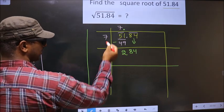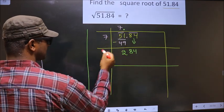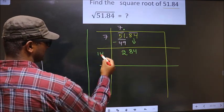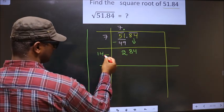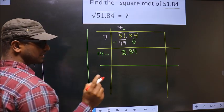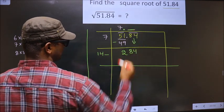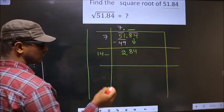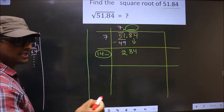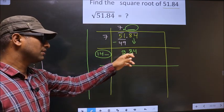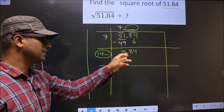Now here we should add these two numbers and write here. So 7 plus 7 is 14. You write here. Now we should write a number here. Condition is whatever number you write here, here also you should write the same number. And also when you multiply this number and this number, then the resulting number should be either equal to this or smaller than this. But it should not be larger than this number.